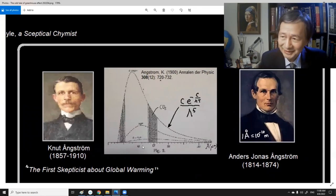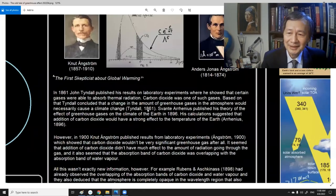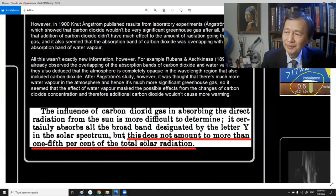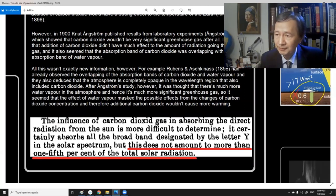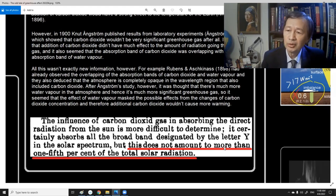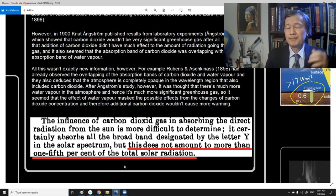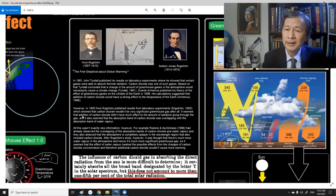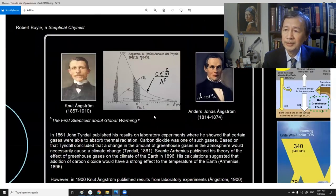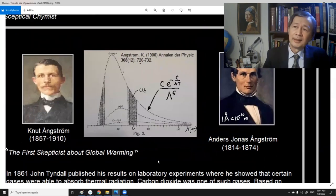I'm not surprised because he must be influenced by his father. Of course, let's talk about the conclusion. His conclusion argued that the contribution of the infrared radiation by the atmosphere is mainly by the water vapor rather than CO2. To be exact, the absorption by the CO2 does not amount to more than one-fifth percent of the total solar radiation. So basically, he argues that the maximum absorption is less than 20 percent.